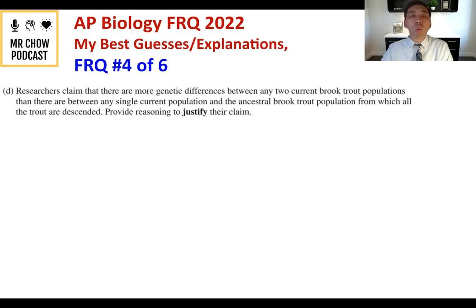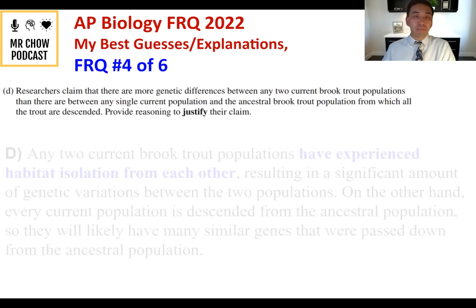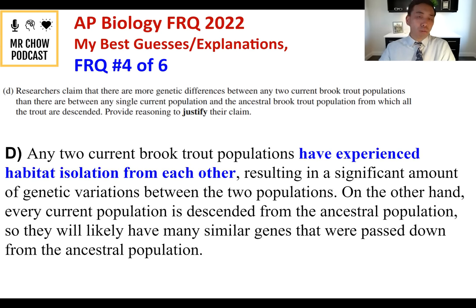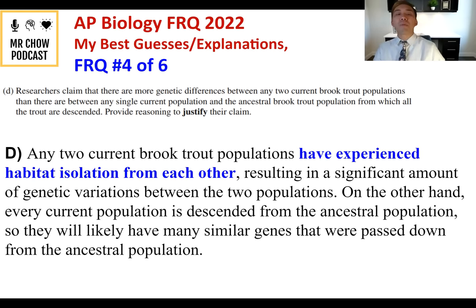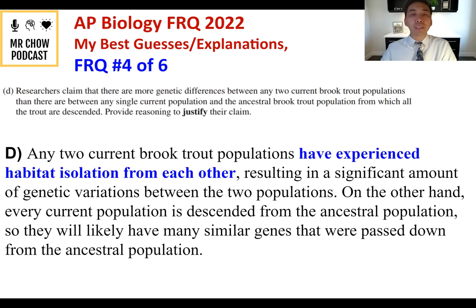Question 4D: Researchers claim there are more genetic differences between any two current brook trout populations than between a single current population and the ancestral population. Any two current populations have experienced isolation from each other, resulting in significant genetic variation between them. However, every current population is descended from the ancestral population, so they share many similar genes passed down from that ancestor. Habitat isolation leads to reproductive isolation, creating many differences over time.